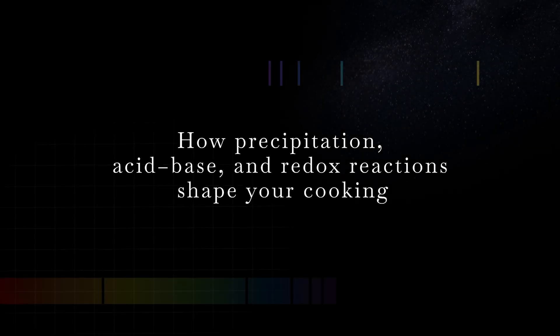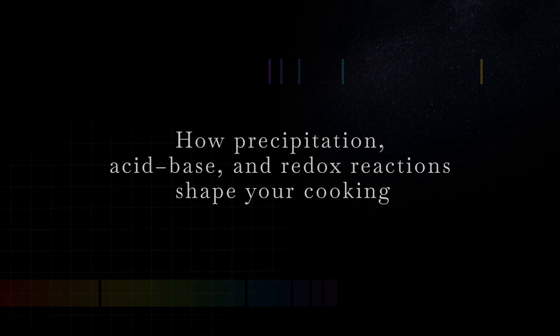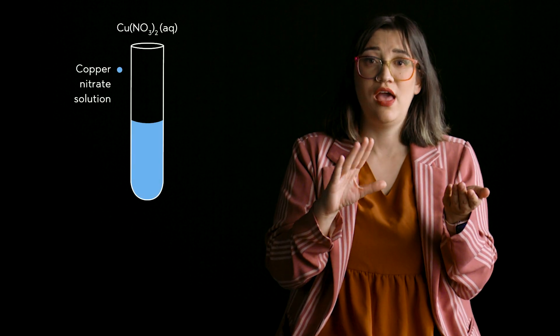Let's explore. A precipitation reaction occurs when two soluble substances in a solution mix and produce an insoluble solid, known as a precipitant. These reactions occur due to strong attractions between the ions in solution, leading to the creation of a solid phase that separates from the solution. Let's look at the reaction between copper nitrate, a blue solution, and sodium hydroxide, a colorless solution. In water, copper nitrate splits into copper ions and nitrate ions, while sodium hydroxide splits into sodium ions and hydroxide ions.